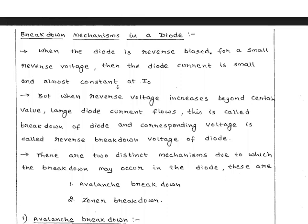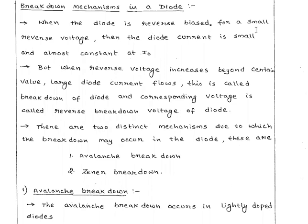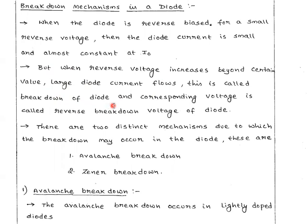The topic is breakdown mechanism in a diode when the diode is in reverse bias. For a small reverse voltage, the diode current is small and almost constant. But when reverse voltage increases beyond a certain limit, a large diode current flows. This is called breakdown of a diode. The corresponding voltage is called the reverse breakdown voltage of a diode.